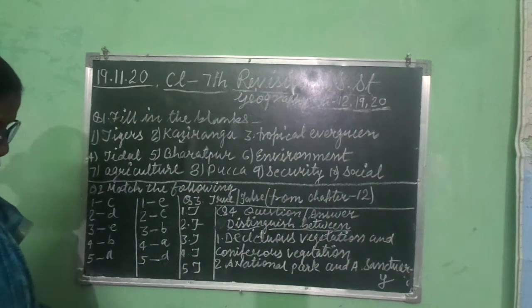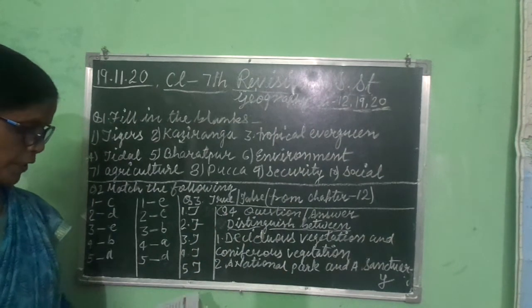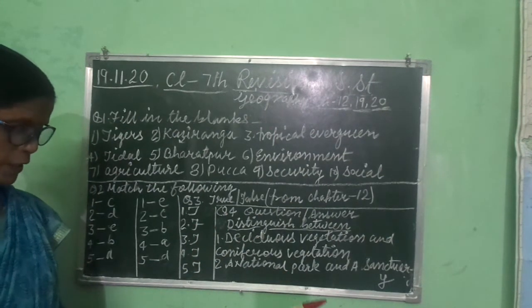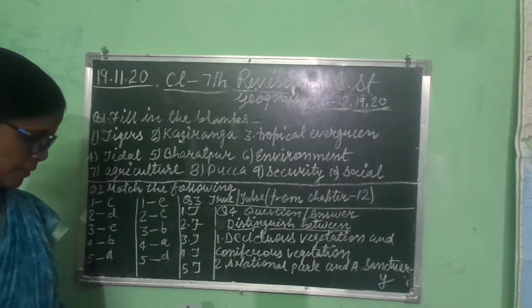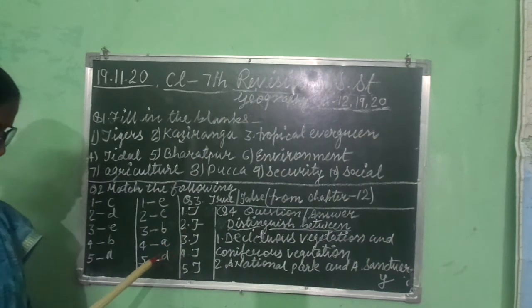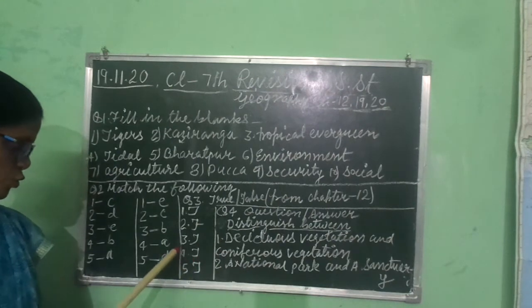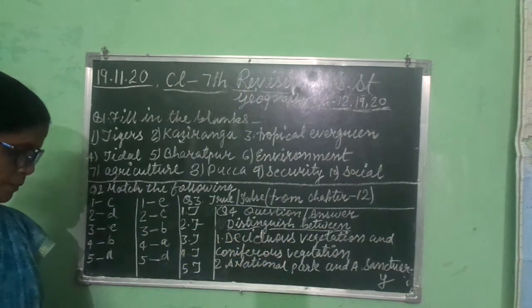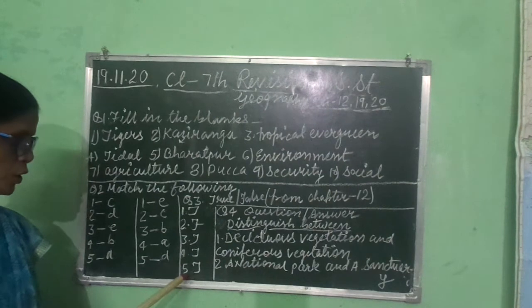Number one: We should protect the environment. True. Second: Seema is the outer layer of the crust. False. Third: The average thickness of the lithosphere is the source of various minerals. True. Fourth: Earth is sometimes called a water planet. True. Fifth: Biosphere is a very important part of the environment. True.